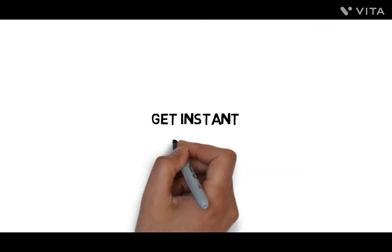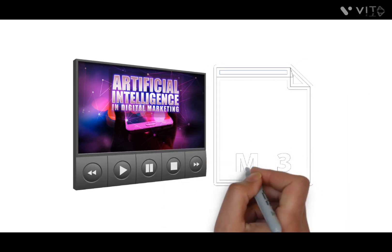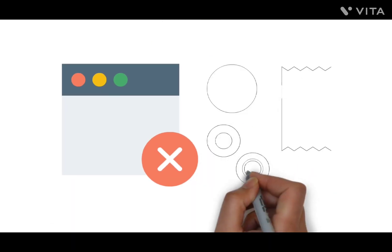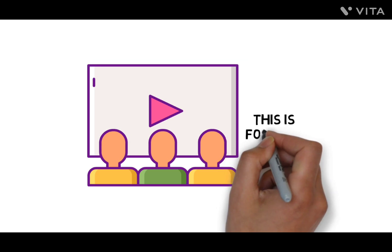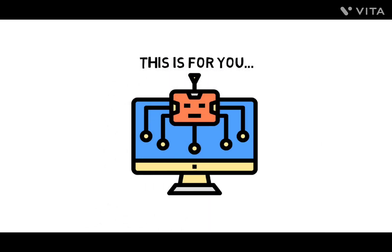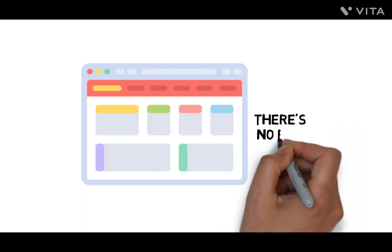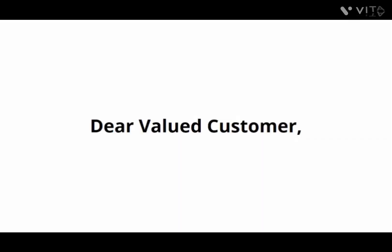To get instant access, simply click the link below, enter your information, and you'll get instant access to the entire video training plus the fast-action bonus MP3s. Please don't wait — if you close this page you may never have the opportunity to upgrade again at this low investment. If you prefer to learn by being shown how to do something and want to get results quickly, this is for you. If you're serious about how artificial intelligence will transform digital marketing and how to be ready, this is for you.